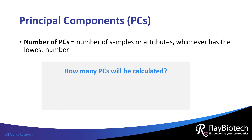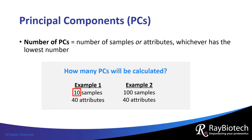Let's look at some examples. If you have 10 samples and 40 attributes, how many principal components would be made? Right — 10. There would be 10 principal components since 10 samples is a lower number than 40 attributes. If you have 100 samples and 40 attributes, how many principal components would be made? Right again — 40. This time the number of attributes determines how many principal components there will be, since the number of attributes is lower than the number of samples.